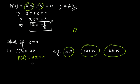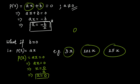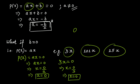When b = 0, the root or zero will always be equal to zero. p(x) = ax = 0 gives x = 0/a = 0. For example, 3x = 0 gives x = 0/3 = 0. If you put zero in place of x you get zero. So zero is the root or zero of a linear polynomial whose constant term is missing.